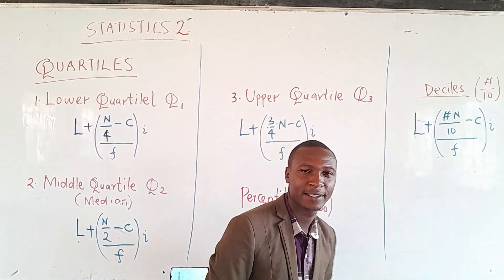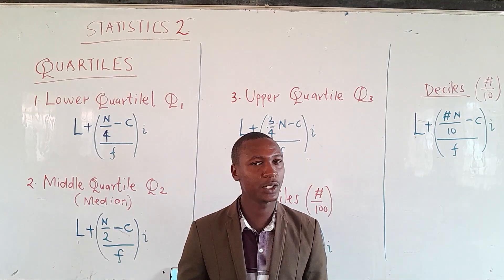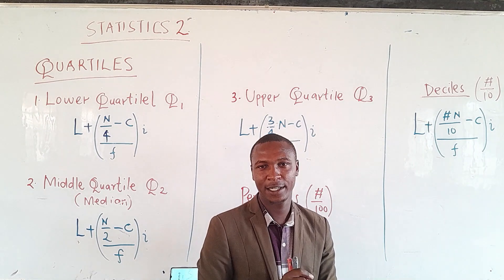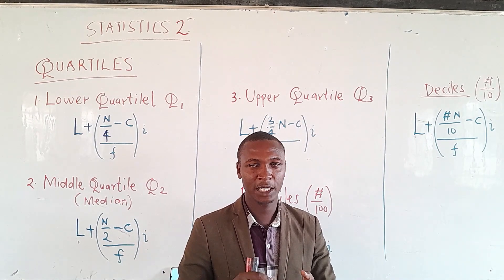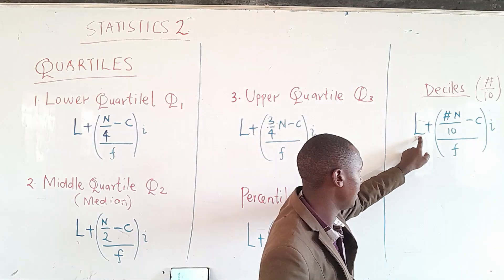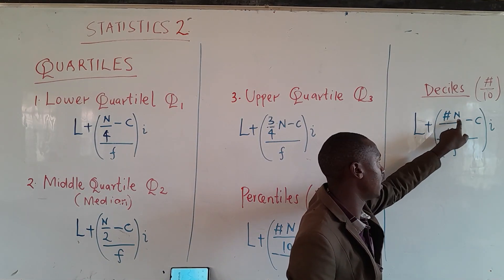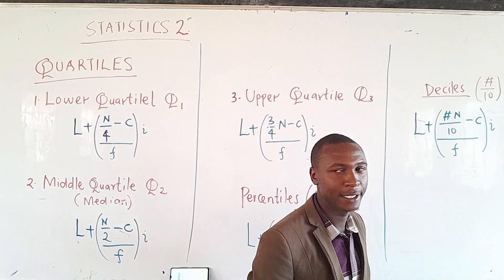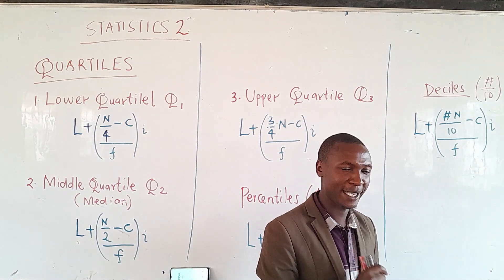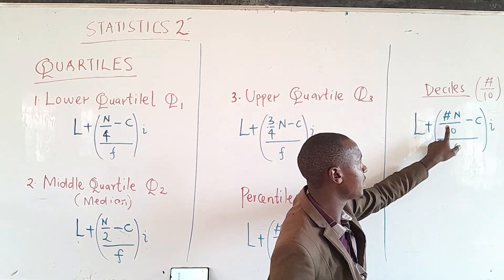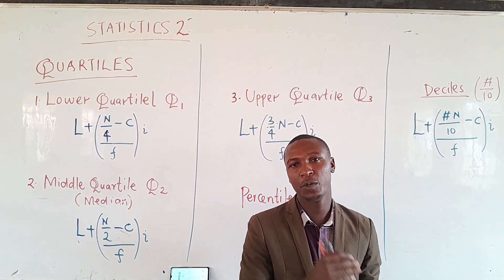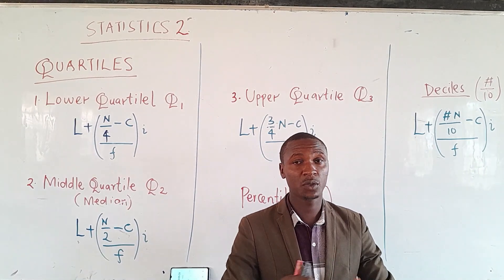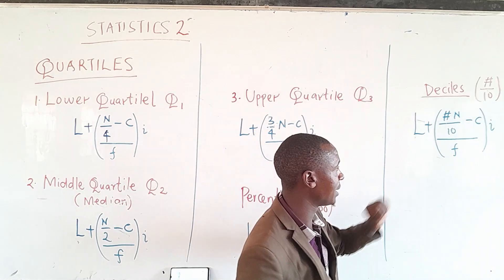Apart from percentiles, we can also talk about deciles. The prefix 'deci' means 10, and therefore we compare a given data using a maximum value of 10. The formula becomes L plus (class number over 10 multiplied by n, minus c) divided by f, multiplied by i. The class number here is a value between 1 and 10, such as 1, 2, 3, up to 8 over 10, and so on.